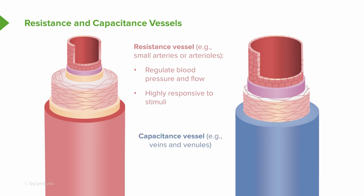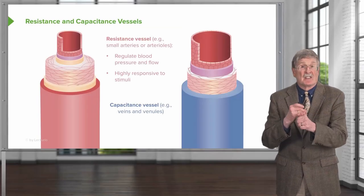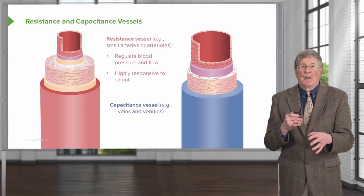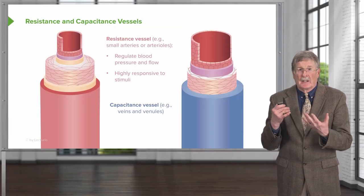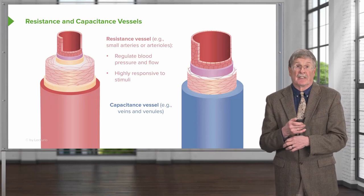Veins, on the other hand, are capacitance vessels — those are the veins and venules. They store blood; they can dilate more, and they don't squeeze as well, but that's where two-thirds of the blood is stored at any given time.